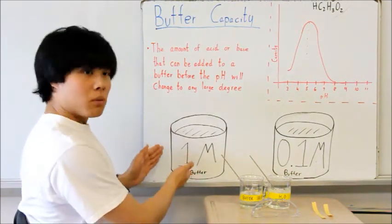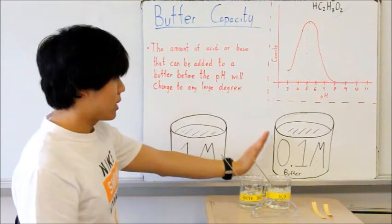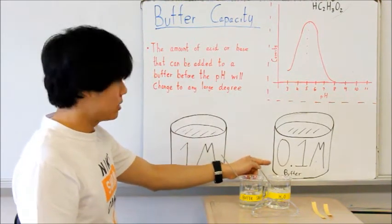While the 0.1 molar only has 0.1 moles for each liter. Therefore, 1 mole of hydrogen hydroxide ions can be neutralized here. As with here, you can only neutralize 0.1.